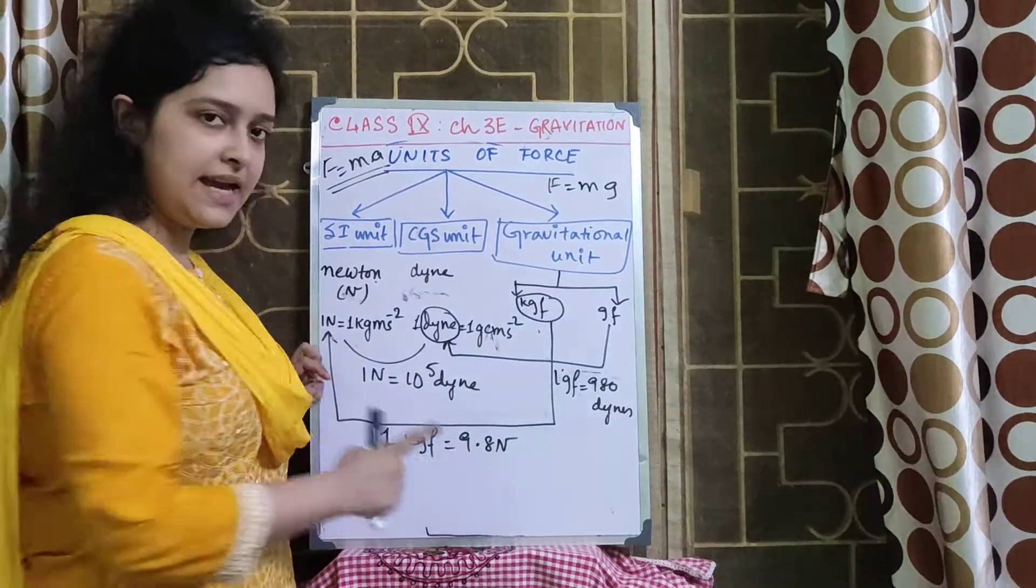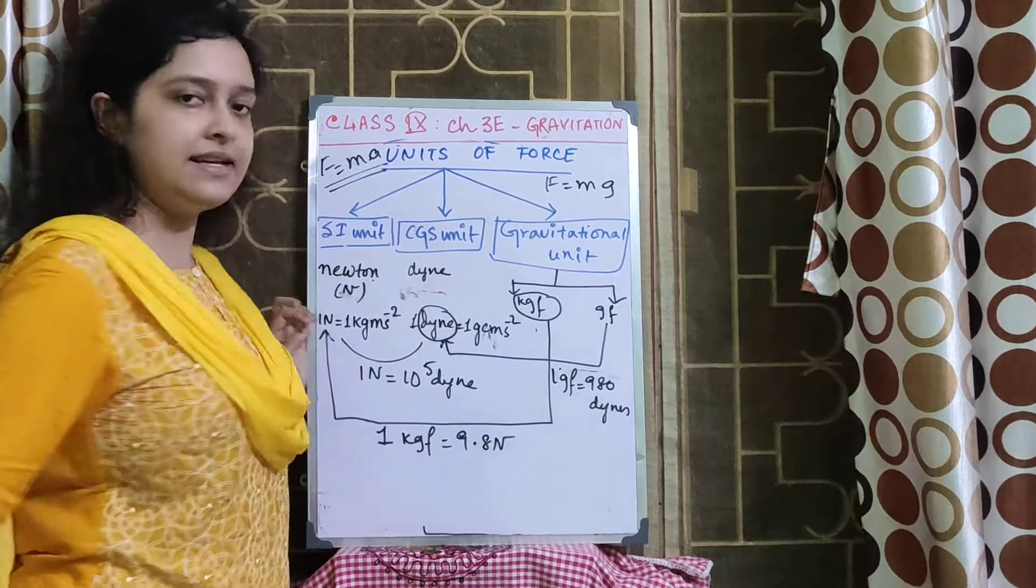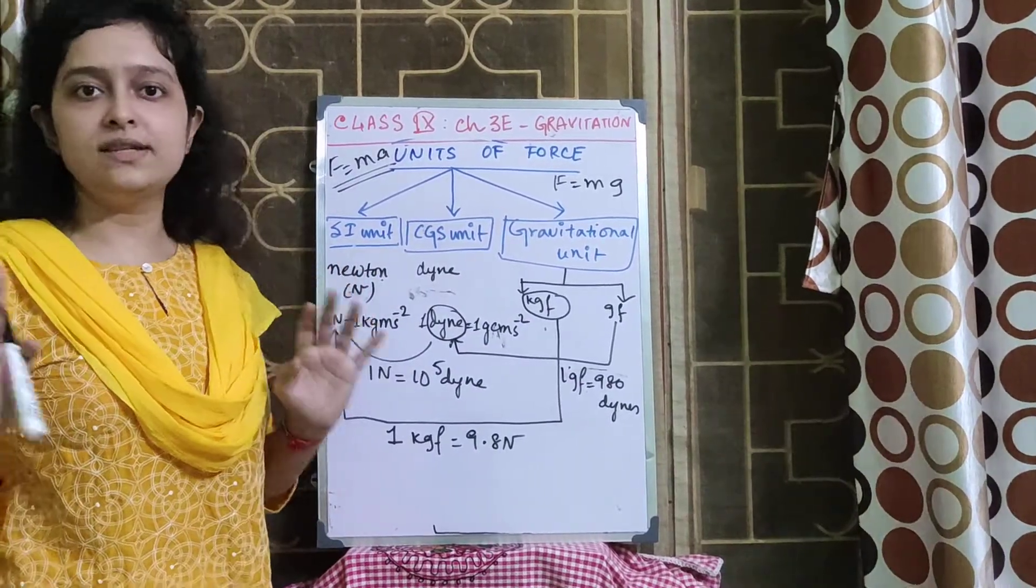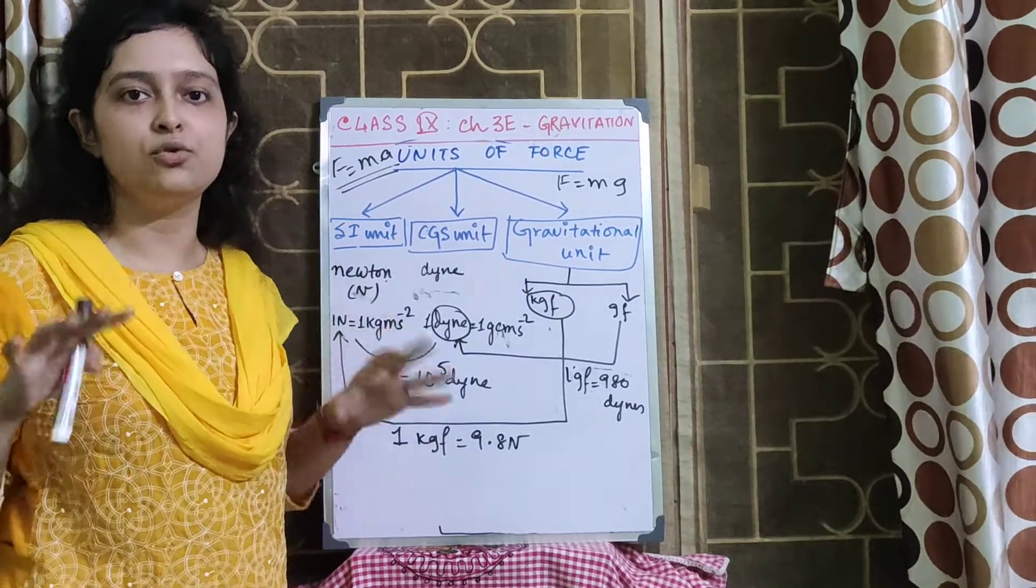1 KGF is 9.8 Newton. And GF and Dyne, 1 GF is 980 Dynes. All the units are very important. So please be very much confident in the units.